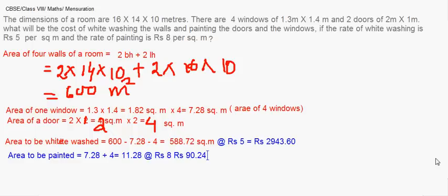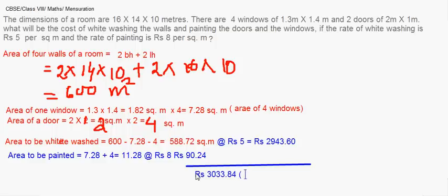The total cost of whitewashing and painting combined is approximately ₹3033.84. Hope you followed this — we will take more such questions in the next few sessions. Thank you.